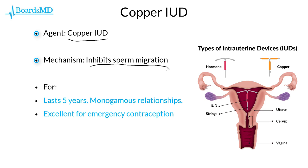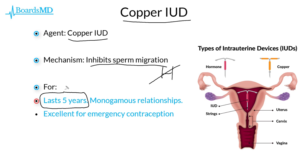Focusing first on the copper IUD: this instrument works by inhibiting sperm migration, achieving this by causing local inflammation. It does not utilize any hormones, making it extremely ideal for patients who have contraindications to hormonal therapy. Other advantages include lasting for five years once implanted, which is extremely convenient. The copper IUD is also ideal for patients in long-term monogamous relationships, as — like the progesterone IUD — it does not provide any barrier against STIs.